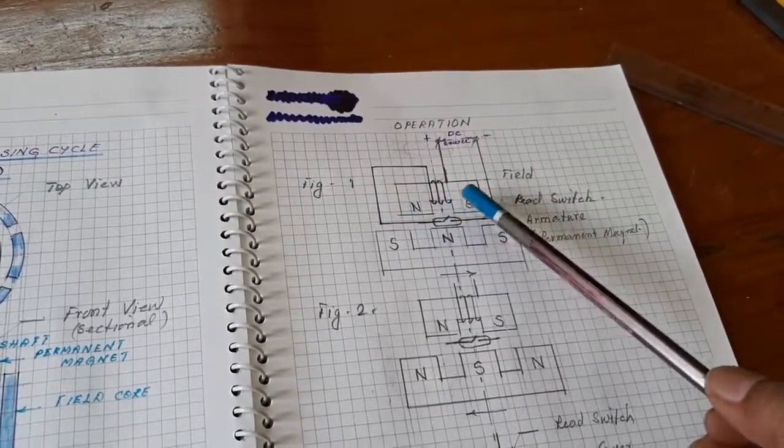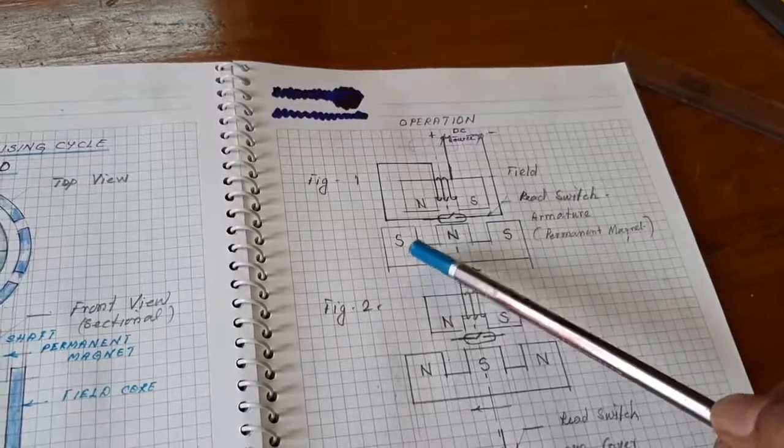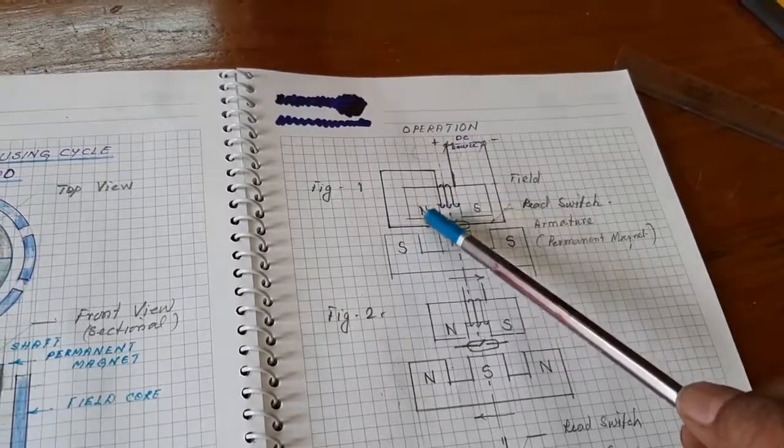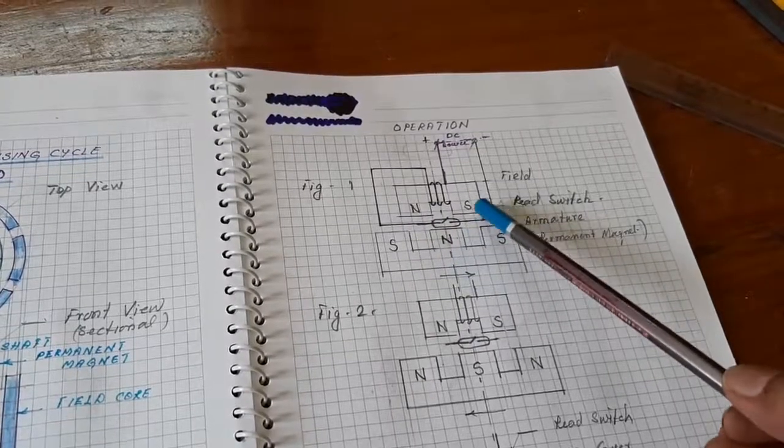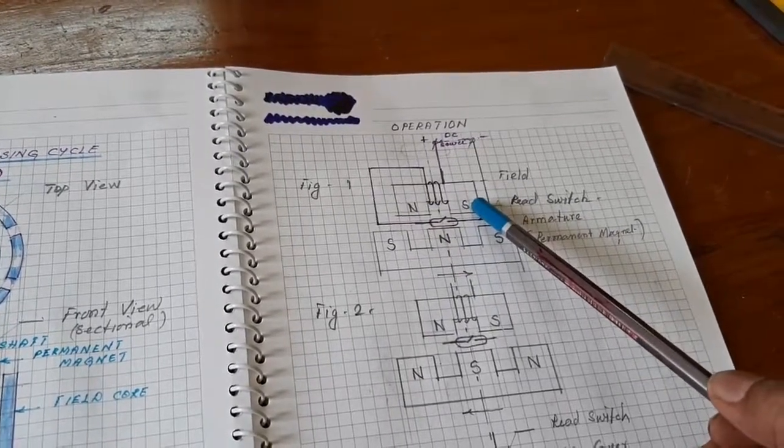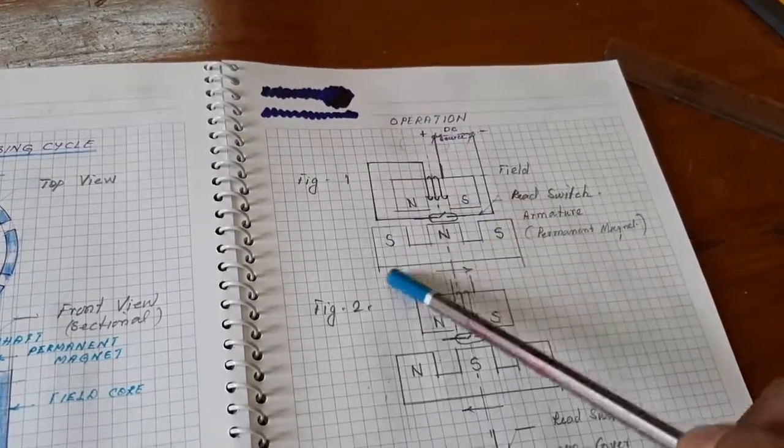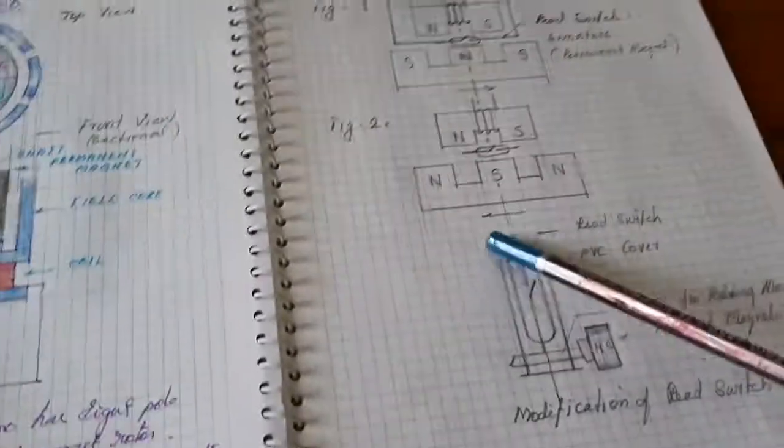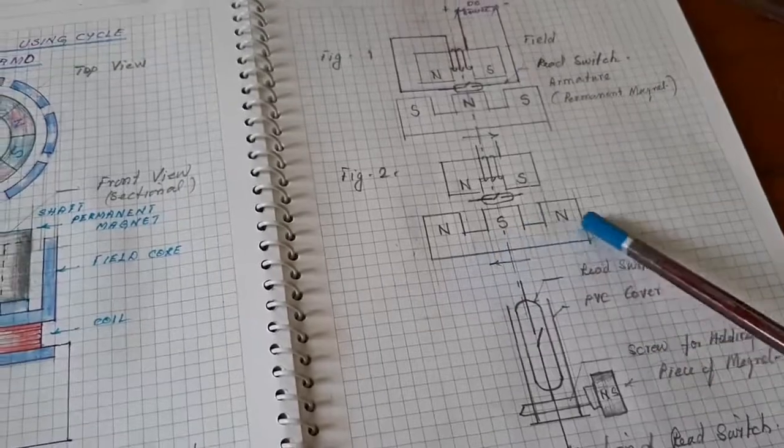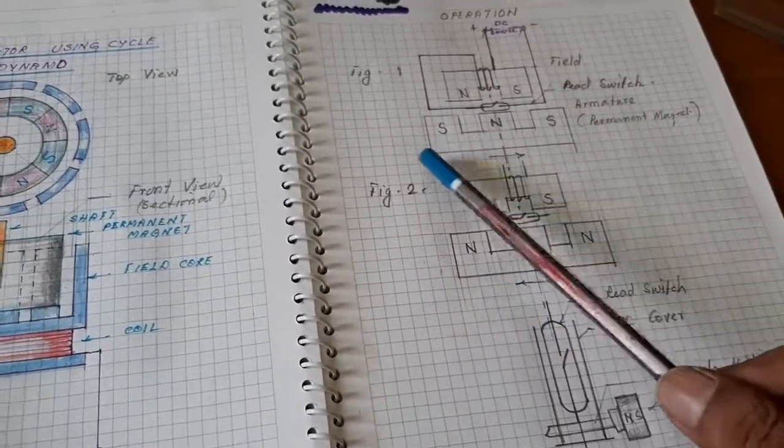This creates north and south poles. What happens? The rotor south pole is attracted by the field magnet north pole, and the rotor north pole is attracted by the field magnet south pole. Hence the rotor moves.